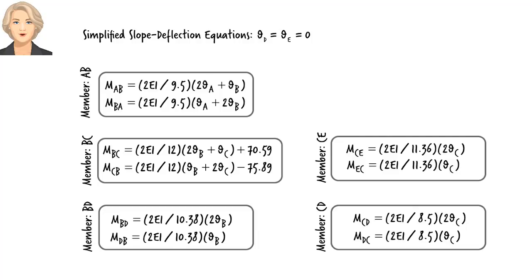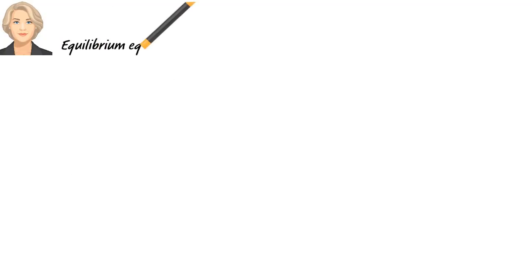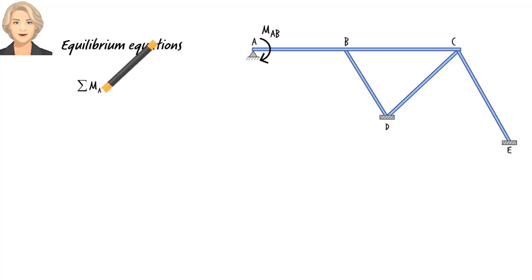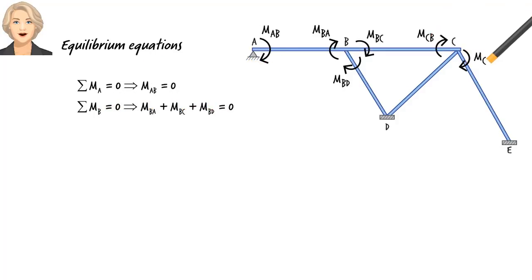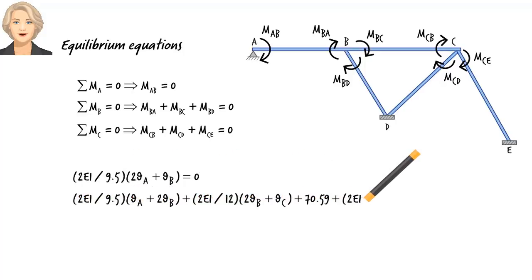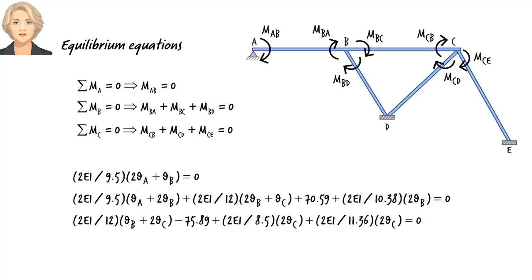Now we are ready to write the joint equilibrium equations. At joint A, there is only one internal moment, MAB. At B, there are three member end moments. Here is the equilibrium equation for the joint. There are also three member end moments at joint C, resulting in this equilibrium equation. We are now going to expand these equations using the slope deflection equations. Solving these equilibrium equations simultaneously for the unknown rotations, we get...